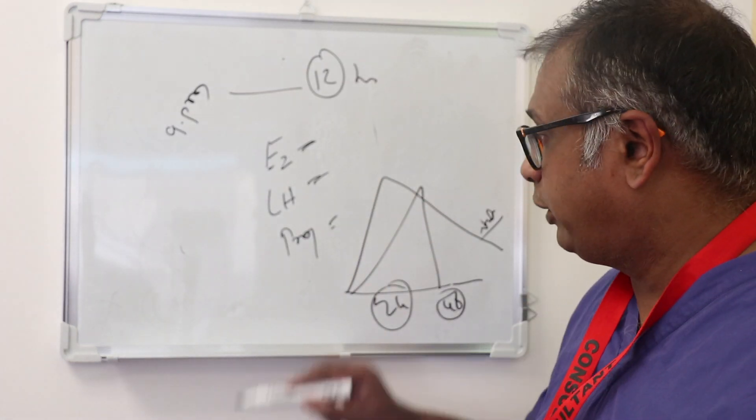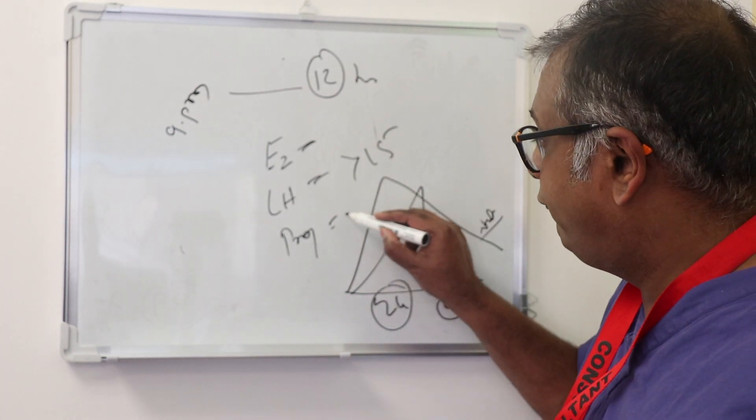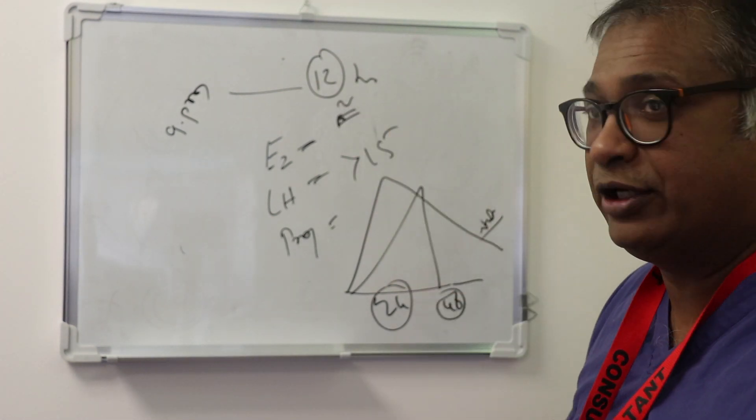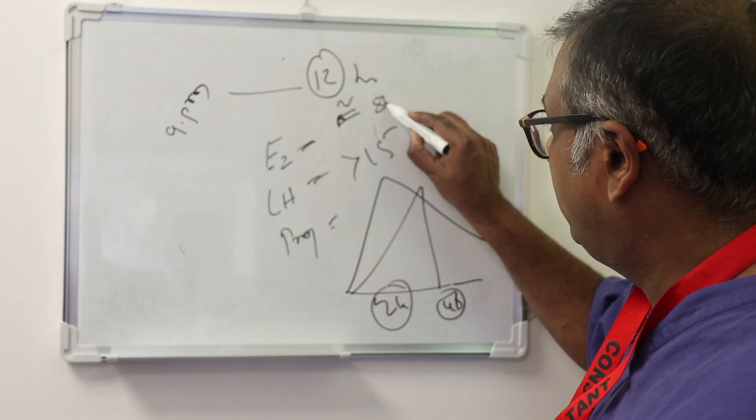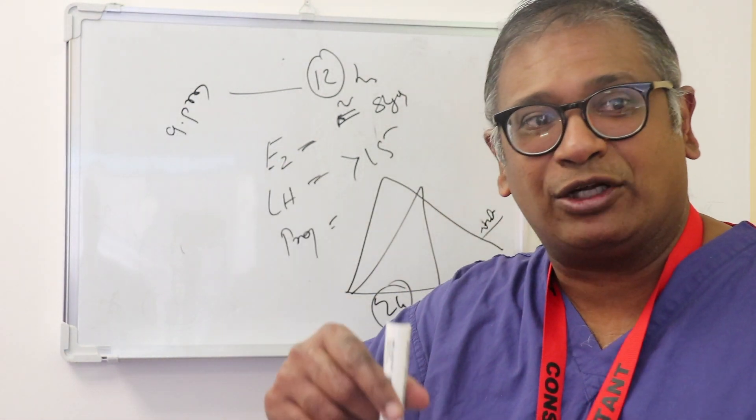What are you looking for? You're looking for an LH more than 15, an E2 which is similar to the earlier E2 or slightly lower. Why? Because as ovulation approaches, E2 levels start going down in nature. Progesterone is the key.